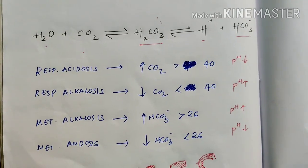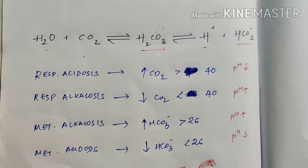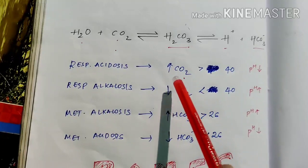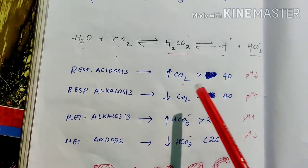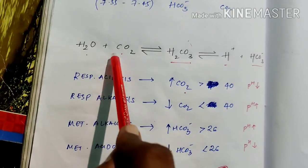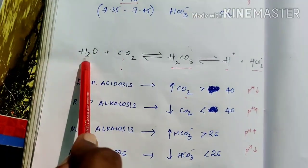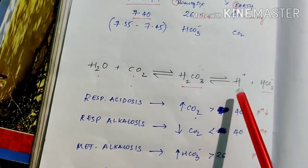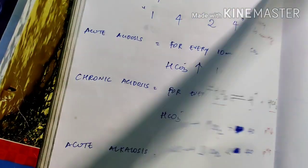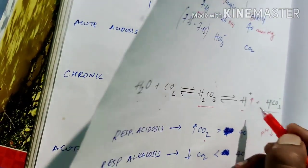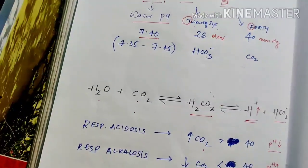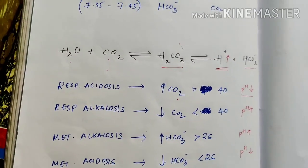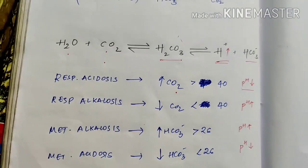Whenever there is a respiratory problem, CO2 increases because the lungs can't expire enough. The increased CO2 binds with H2O to form more H2CO3, which then produces more H plus and HCO3 minus. This increase in H plus means acidosis, and pH decreases. This is the basic mechanism behind respiratory acidosis.